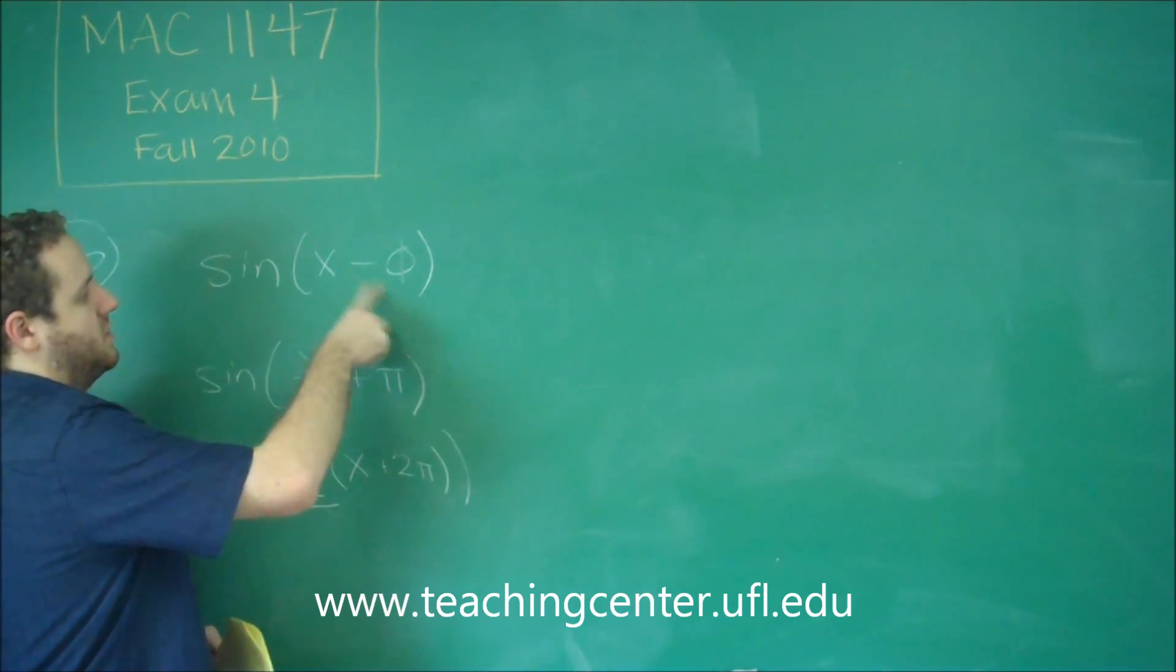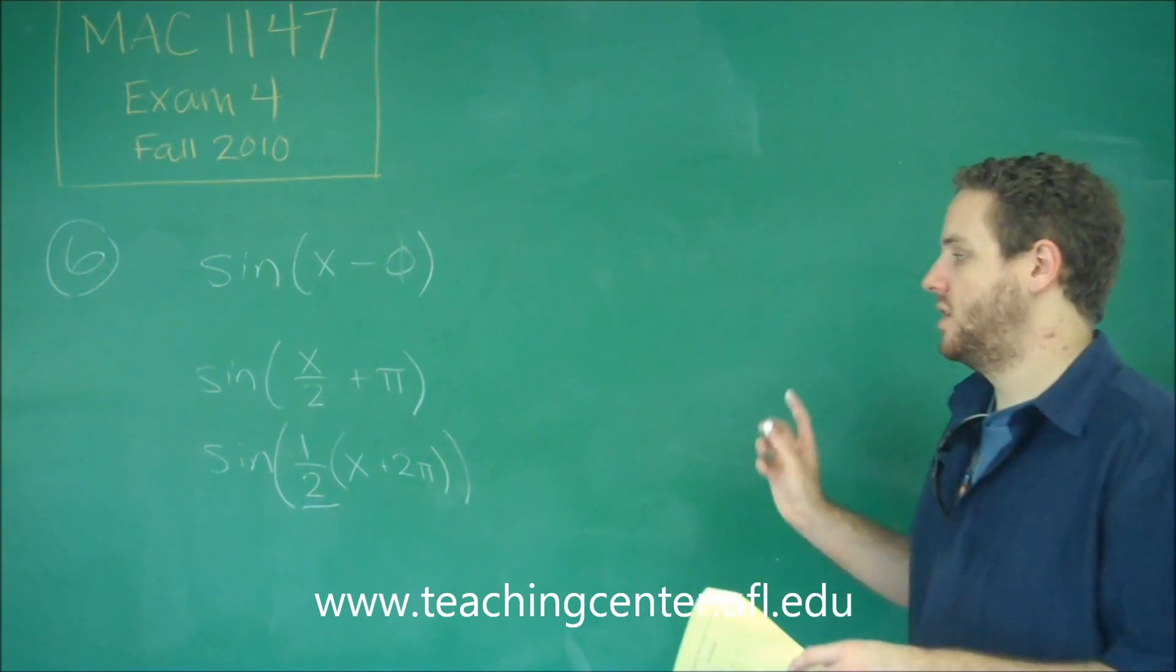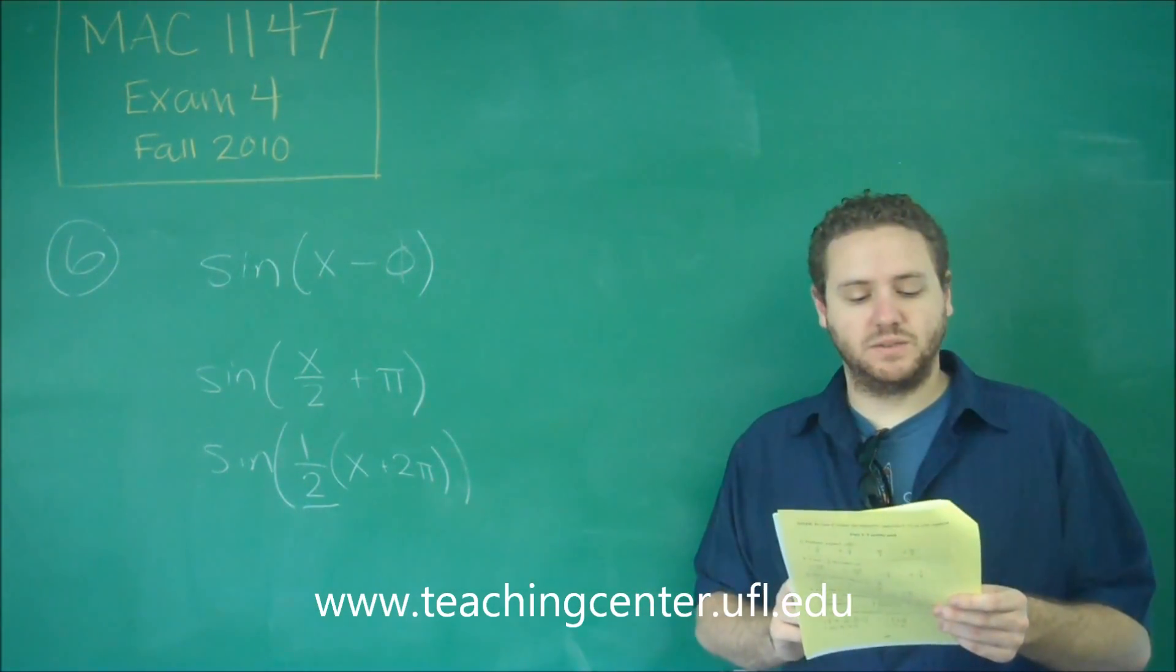Because our phase shift is always in the form X minus, we have a plus here. So that means it's negative. Meaning we have a phase shift to the left. So we have a phase shift of negative 2 pi in this case, which is the answer A.